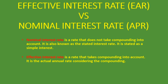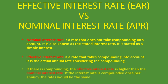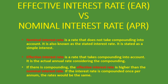Effective interest rate is a rate that takes compounding into account. It is the actual annual rate considering the compounding — you take compounding into account to know what the actual rate is that you're paying. If there is compounding, the effective interest rate is higher than the nominal interest rate. That's always the case when there is more than one compounding during a period.